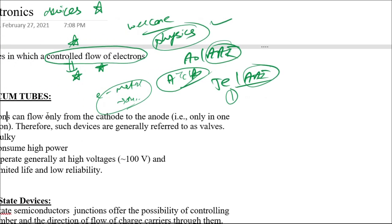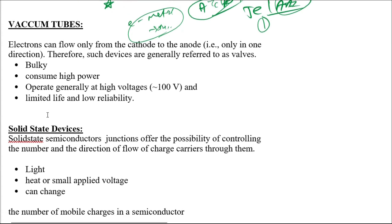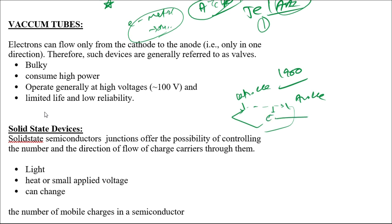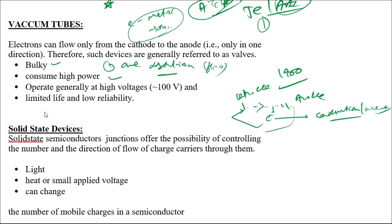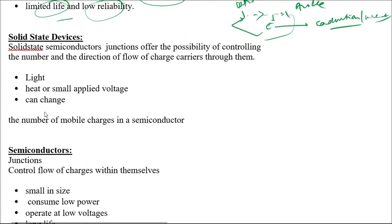We'll start with a brief history of electronic devices. In the early 1900s, vacuum tubes were used — a cathode and an anode were present, and once temperature was applied to the cathode, electrons would flow from the cathode to the anode, generating current. The problems with vacuum tubes were: current flowed only in one direction, they were very heavy, consumed high power, operated at around 100 volts, had limited life, and low reliability.